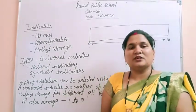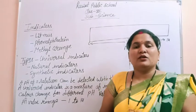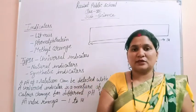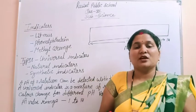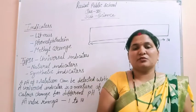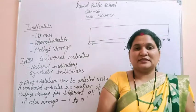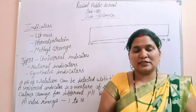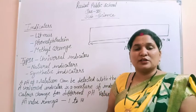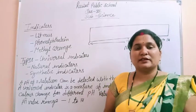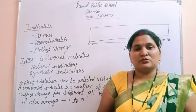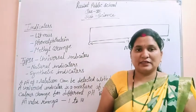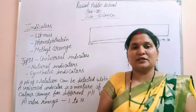Good morning students. In the previous lecture, we discussed about acids and bases — properties of acids and bases, and many different examples such as sodium hydroxide, potassium hydroxide, calcium hydroxide, hydrochloric acid, sulfuric acid, nitric acid, and magnesium hydroxide. Today we talk about pH value and indicators.